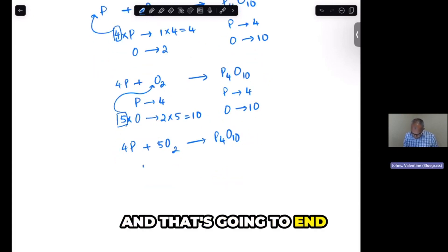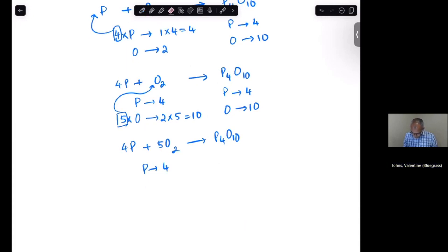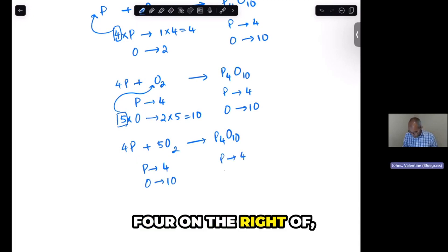And that's going to end up giving me a total of 4 phosphoruses on the left, 10 oxygens on the left, 4 on the right of phosphorus, and 10 oxygens on the right. Alright. I hope that made sense. That's completely balanced. Let's move on to the next one.